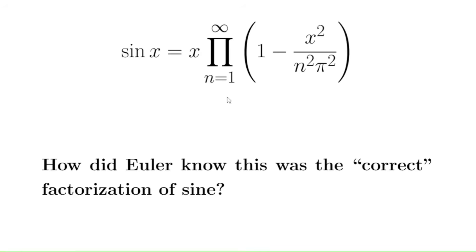But here's the question: how did Euler know that this was the correct way to factor sine? Now we know that this factorization would have the correct zeros and we can show that it converges, but there are lots of functions that have the same zeros as the sine function. For example, how do we know we aren't supposed to have some coefficient out front, or even a function with no zeros like an e^x out here? Well Euler's intuition turned out to be correct, and he came up with very strong evidence and arguments. But it wasn't until more than a hundred years later that it was proved rigorously that this product actually does converge to sine.